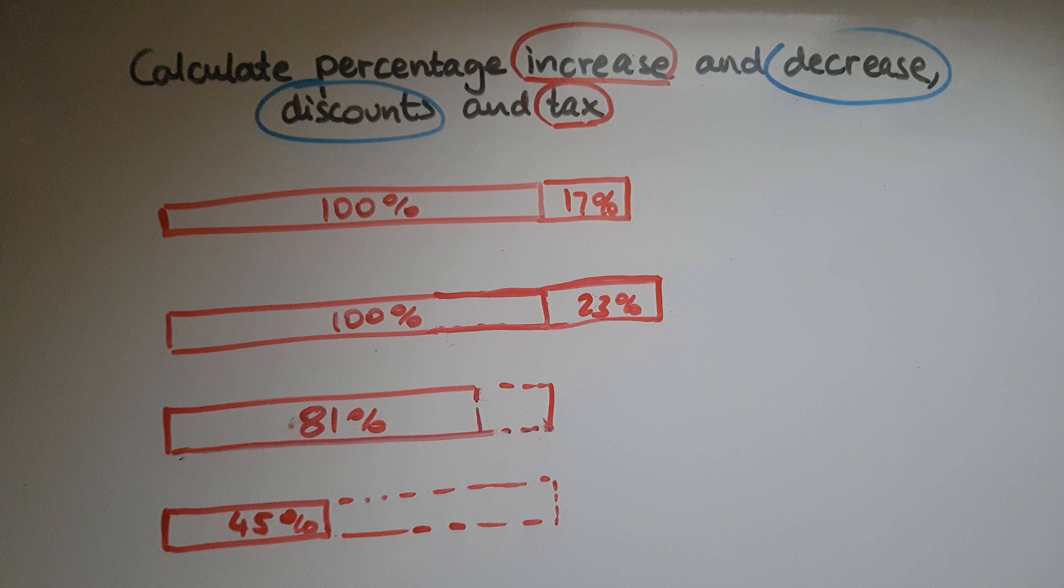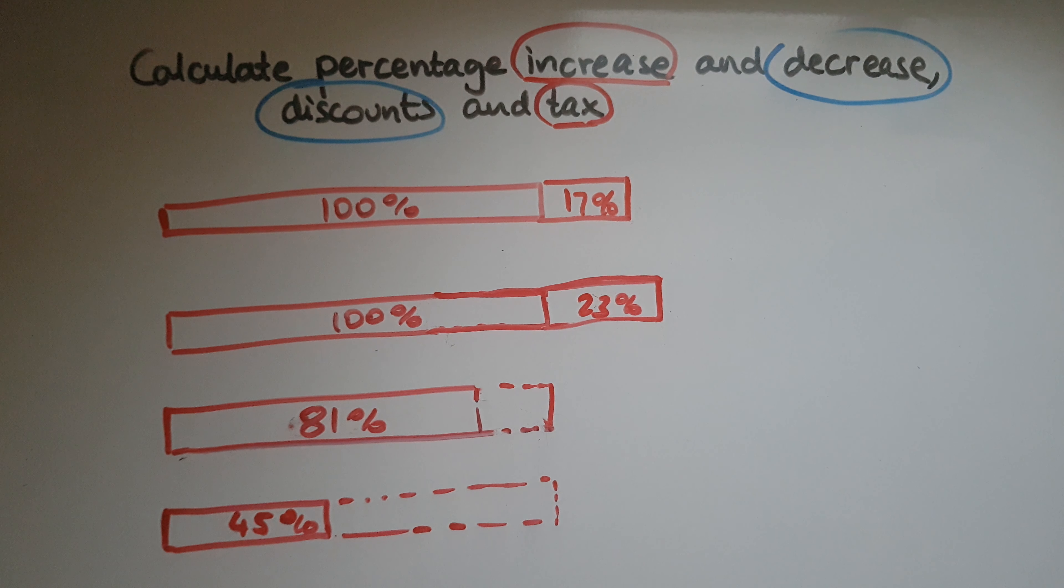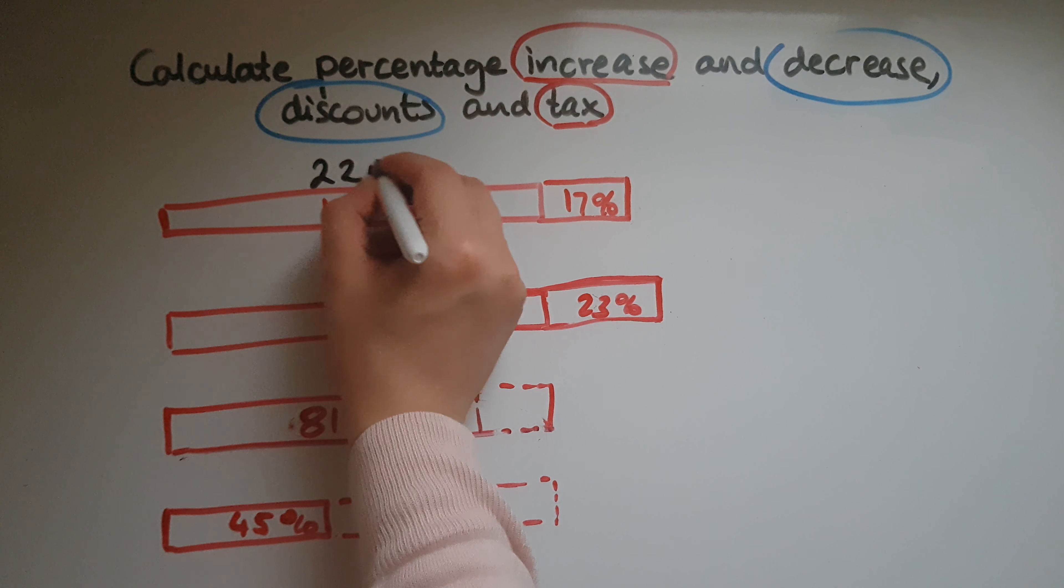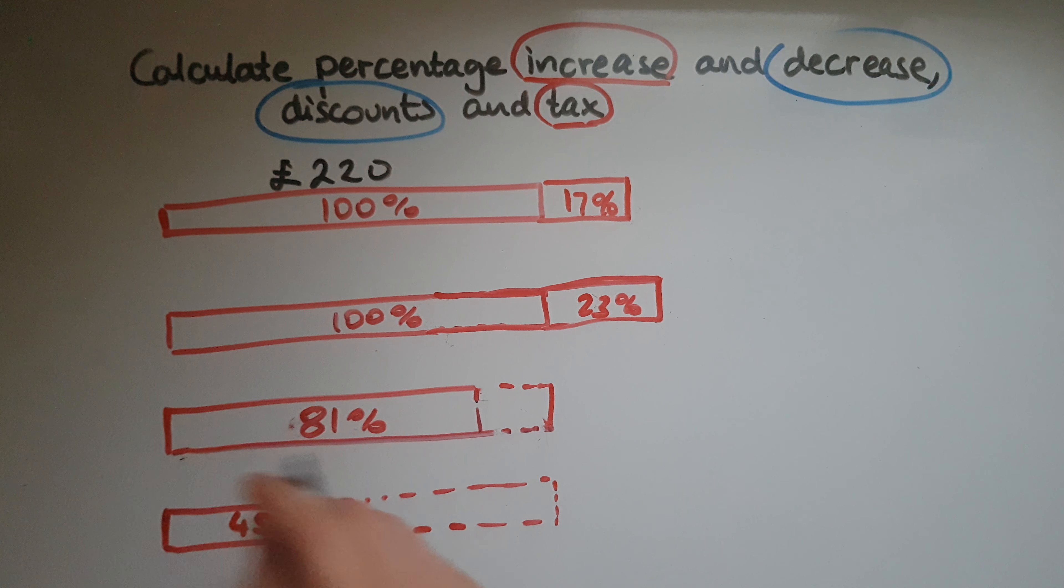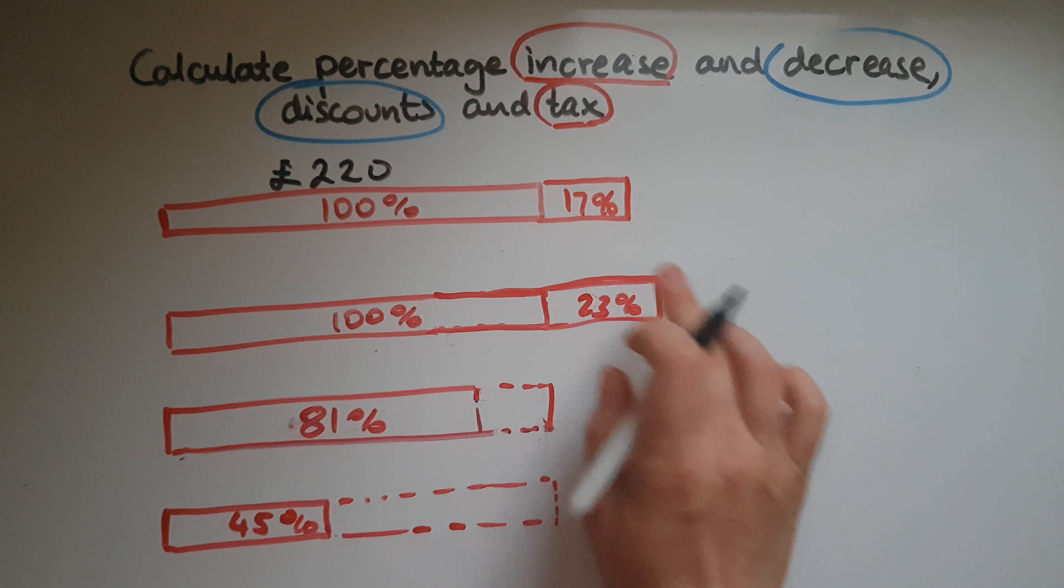So we'll have a look. We've got an amount which is 100%. Let's say we've got £220 as the original cost of a coat, and there will be an increase in price by 17%.